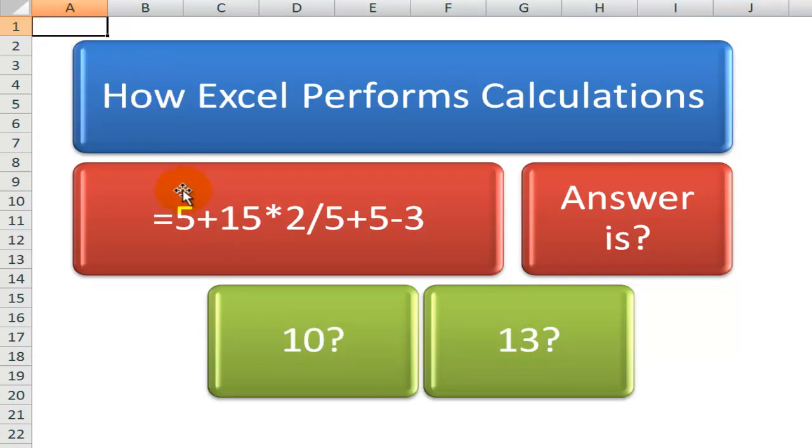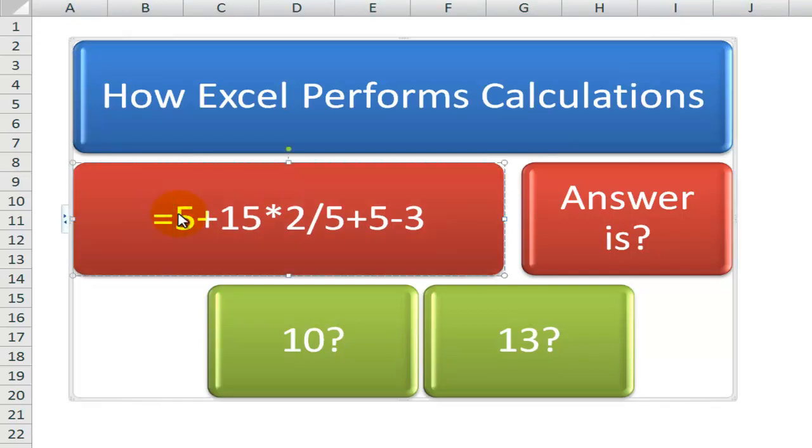It's always dangerous to do mathematical calculations in my head, but nevertheless, I've written in here a formula, so I want to get the result. I'm thinking, all right, I'll take 5, add 15 to that. The result is 20. Multiply that by 2. Now I have 40.